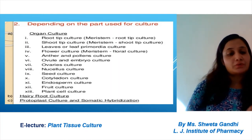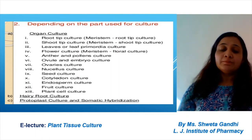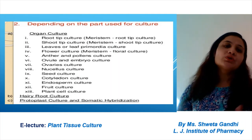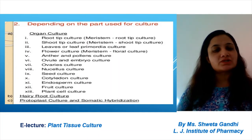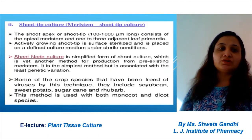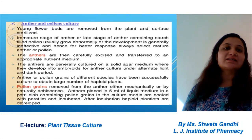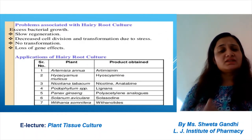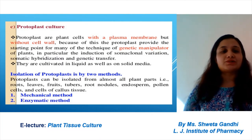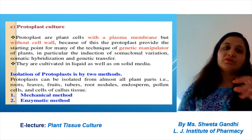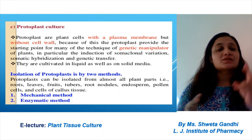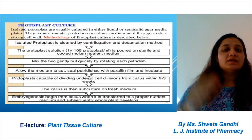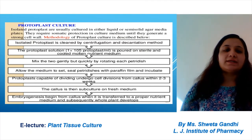Questions sometimes come separately for protoplast culture and somatic hybridization, so you need to know them in detail. Protoplasts are plant cells with the plasma membrane but without the cell wall. For isolation of protoplasts, two methods are used: the mechanical method and the enzymatic method. Protoplast culture is an important culture technique. Applications of protoplast culture are similar to the common applications for plant tissue culture.